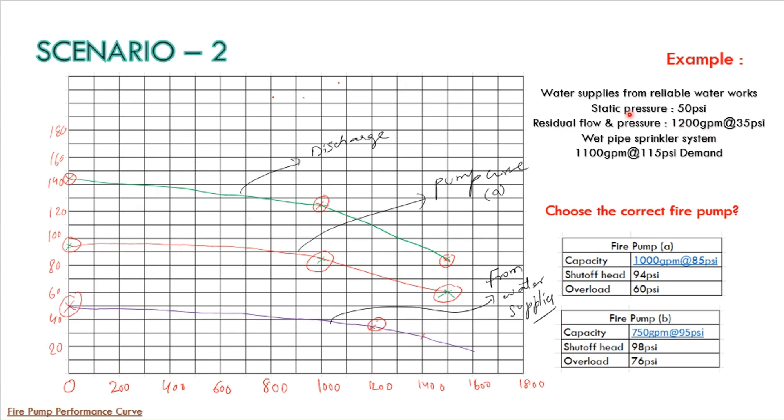We have taken the static pressure readings, residual flow and pressure reading and marked on this particular graph. If you see here static pressure is 50 PSI. So at zero flow it will be 50 PSI we have marked here and residual flow is 1200 GPM at 35 PSI. Then we joined these two points and extended this particular line.